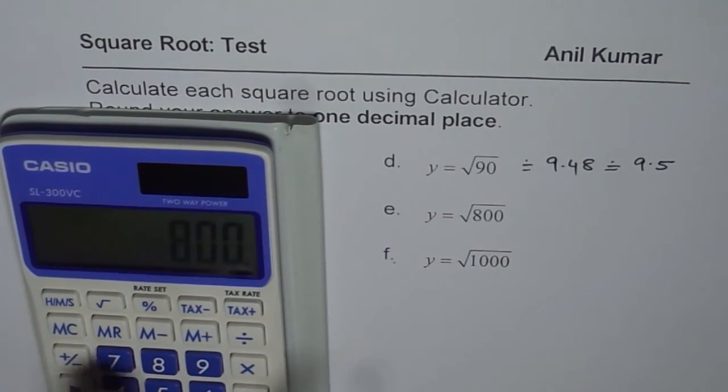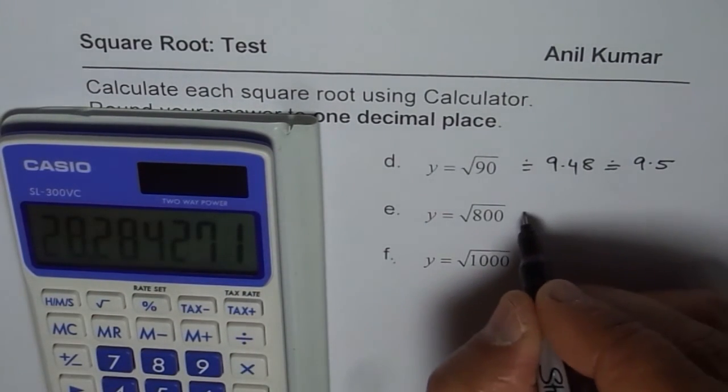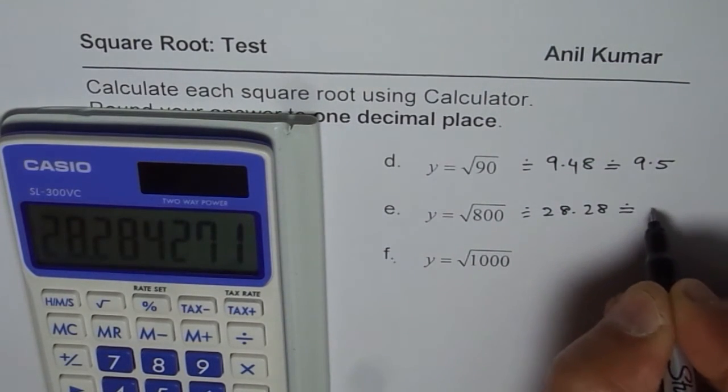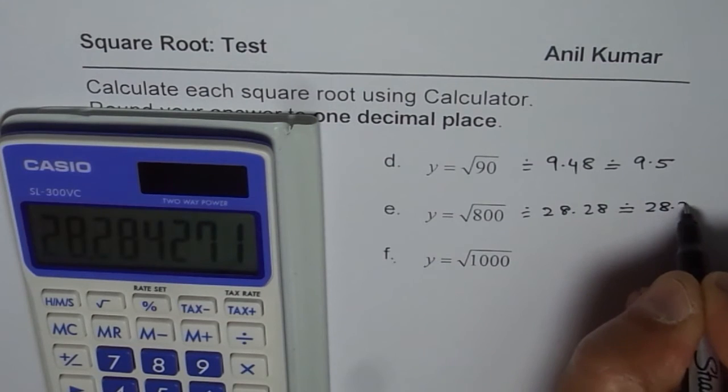800 square root is 28.28, which rounds to 28.3.